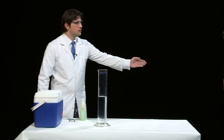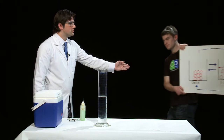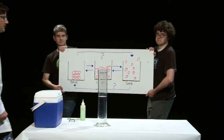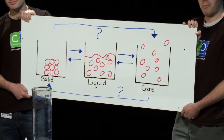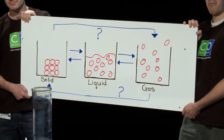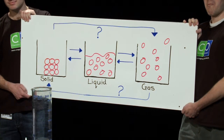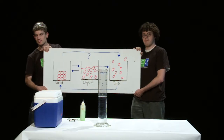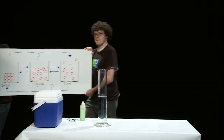So we've now seen four types of physical reactions: melting, freezing, evaporation, and condensation. But there are still two more mysterious physical processes that we haven't seen. In order to investigate these two processes we're going to need a special chemical.